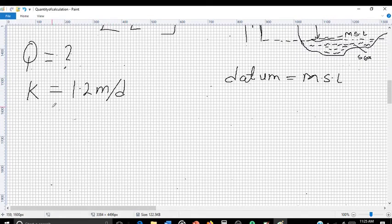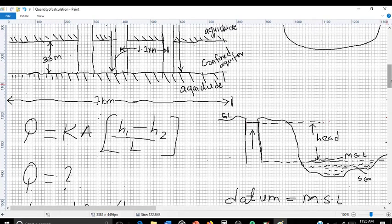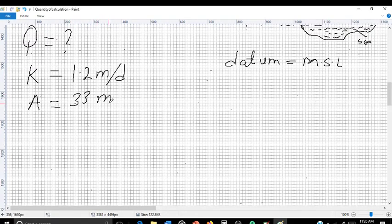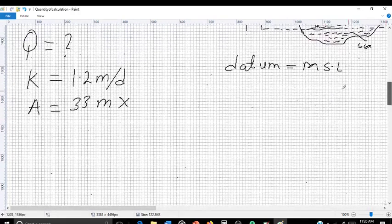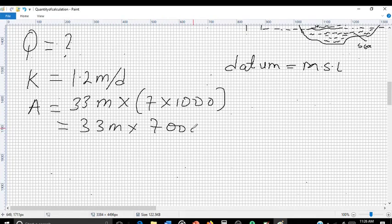Next here is A, which is the area of the aquifer. As you can see, the width of the aquifer is given to us as 33 meters. So 33 meters multiplied by 7 kilometers, which is the length of the aquifer. The length of the aquifer, that is 7 kilometers, multiplied by 1,000 in order to convert it to meters, because all our calculations must be in meters. So 33 meters times 7,000 meters.